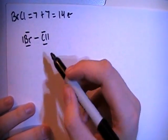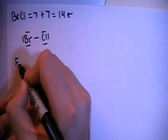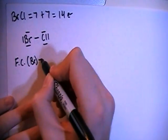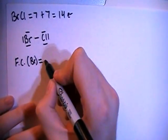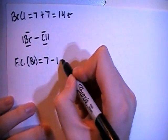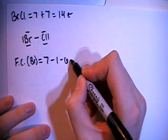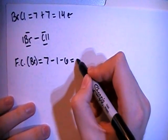So let's go ahead and verify that by checking the formal charges. The formal charge on the bromine is going to be the 7 valence electrons brought in minus the 1 single bond minus the 2, 4, 6 non-bonding electrons for a formal charge of 0.